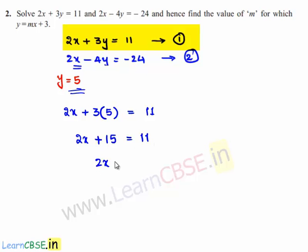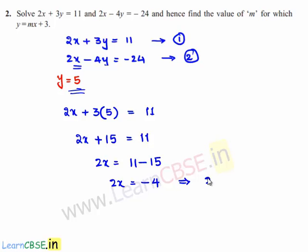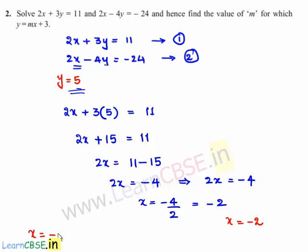So 2x plus 15 is equal to 11. Transposing 15 to the right-hand side, 2x is equal to 11 minus 15, which is minus 4. Therefore x is equal to minus 4 divided by 2, which is minus 2. Hence x is equal to minus 2 and y is equal to 5.